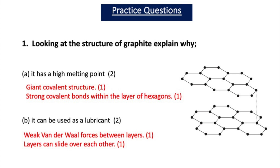The first practice question asks you to look at the structure of graphite and explain why it has a high melting point and why it can be used as a lubricant. Graphite has a high melting point because it has a giant covalent structure with strong covalent bonds within the layers of hexagons. It is used as a lubricant because there are weak van der Waals forces between the layers, meaning the layers can slide over each other.